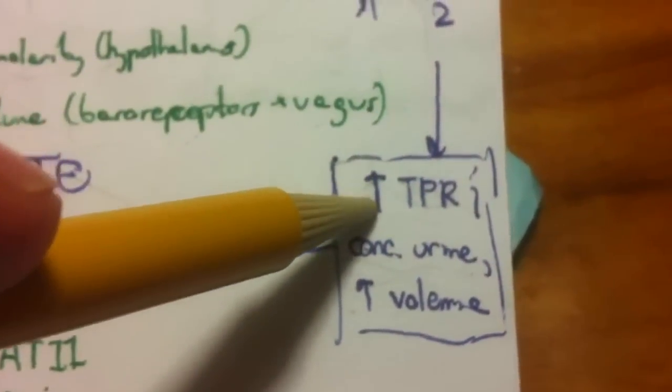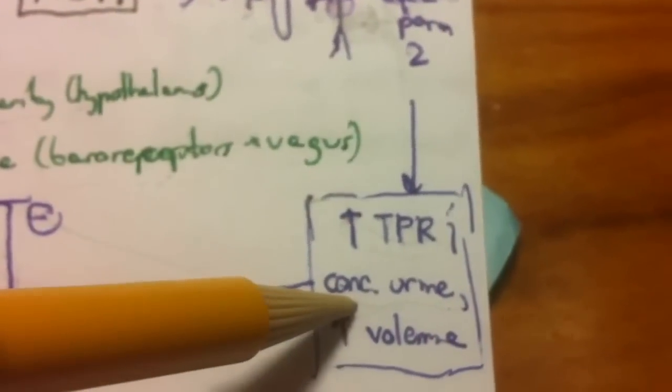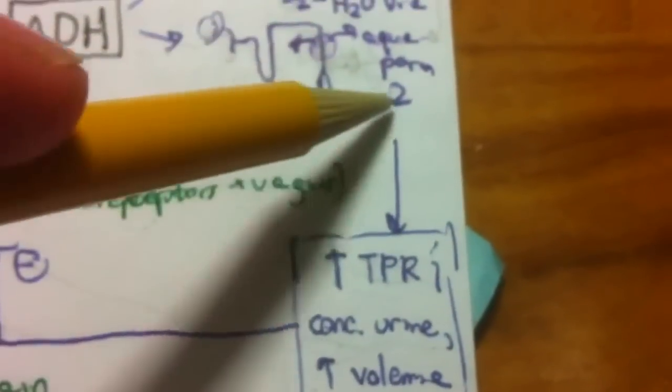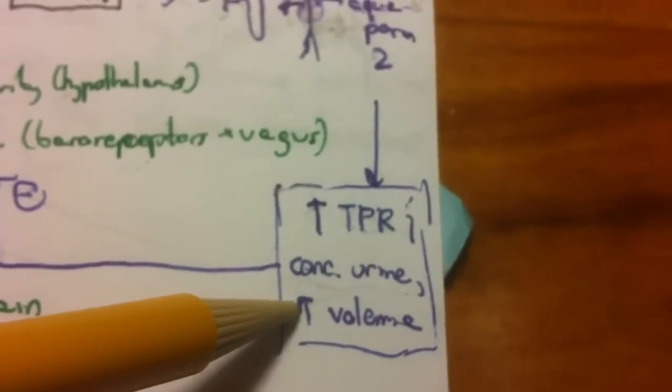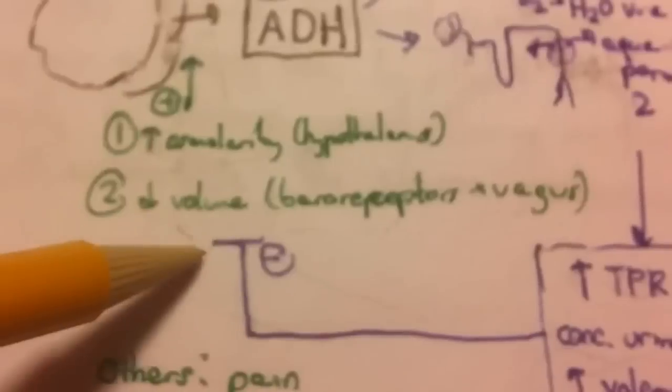The result is that TPR is increased from this effect. The urine is concentrated because we've reabsorbed some free water, and that brings osmolality down to return to its set point, while volemia is brought back up to where it should be.